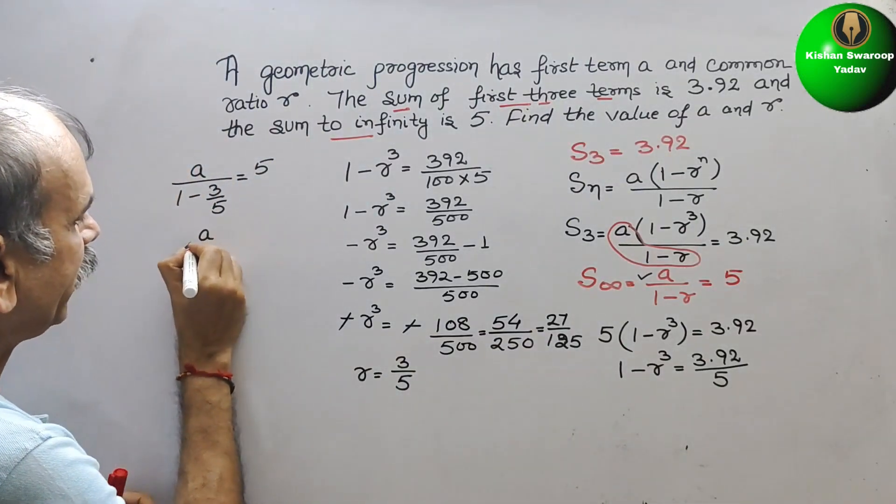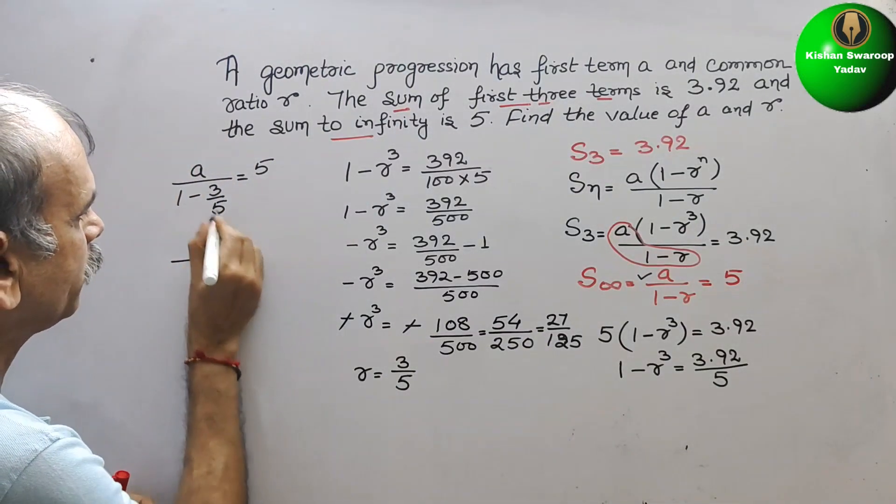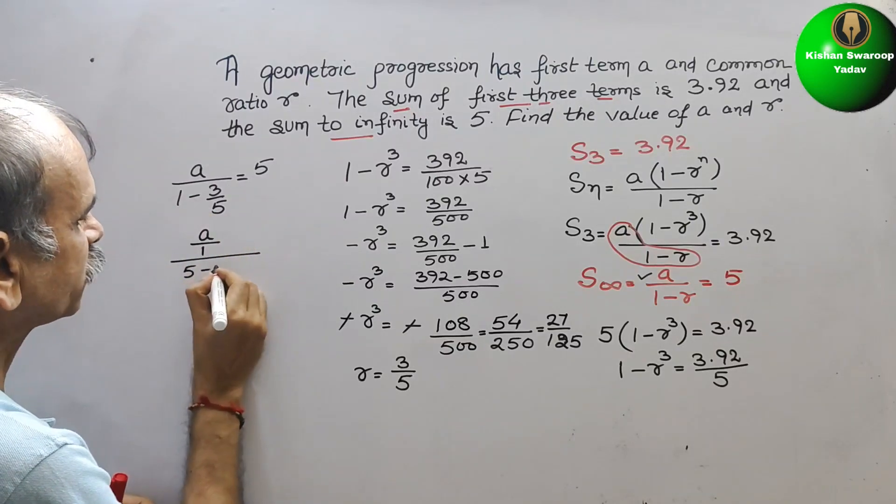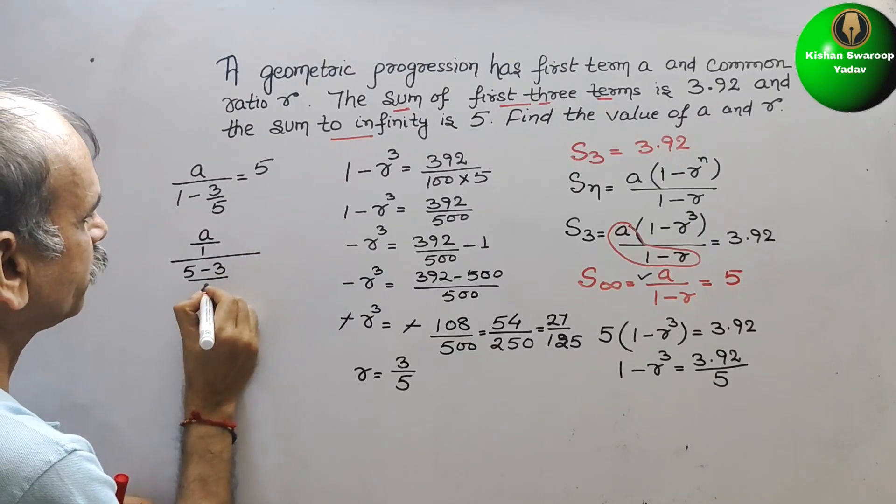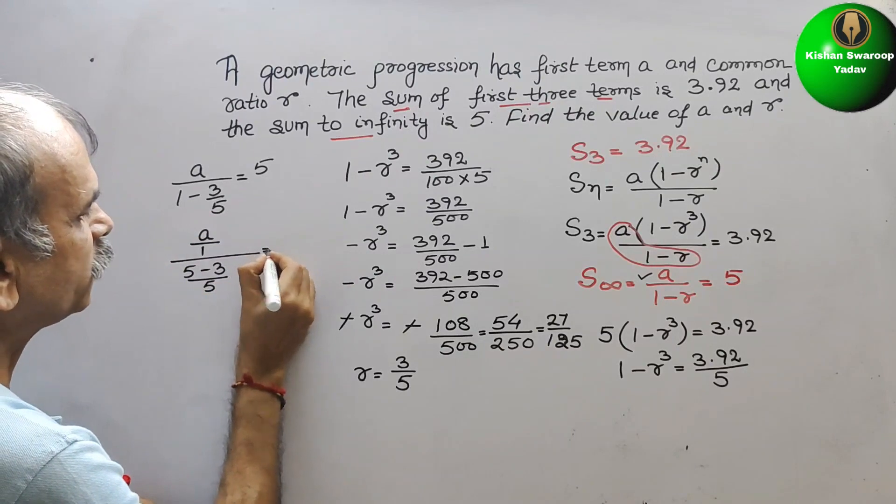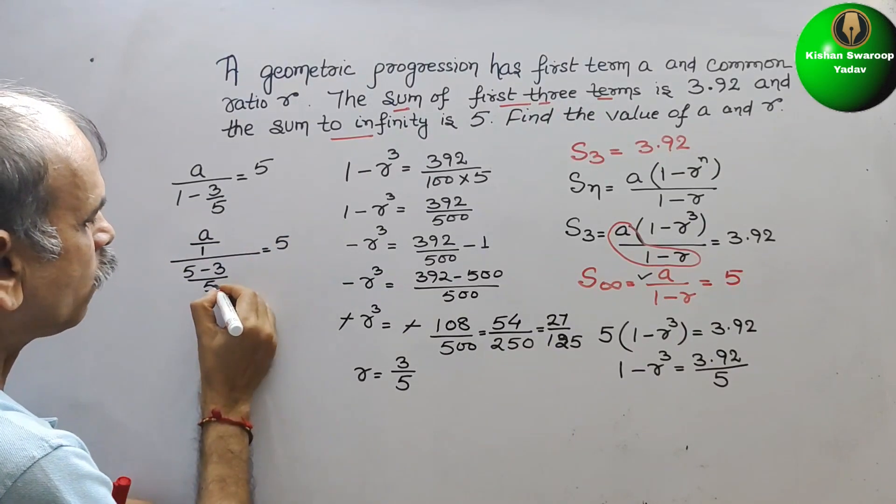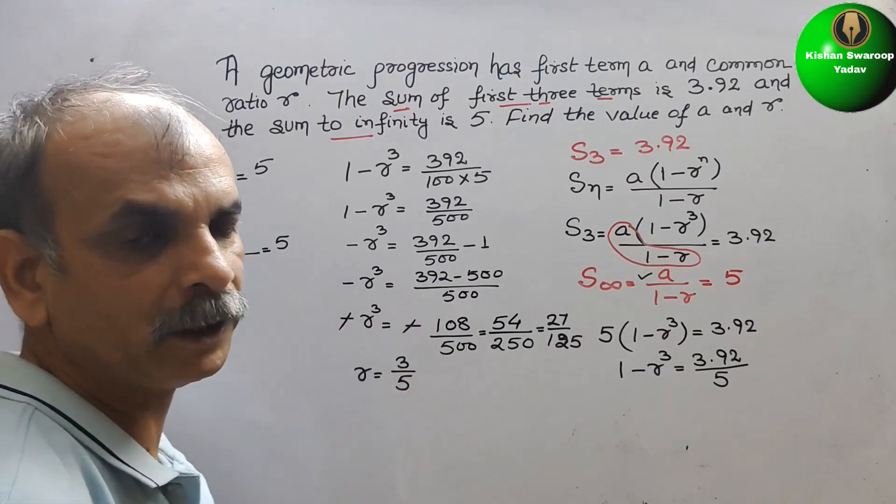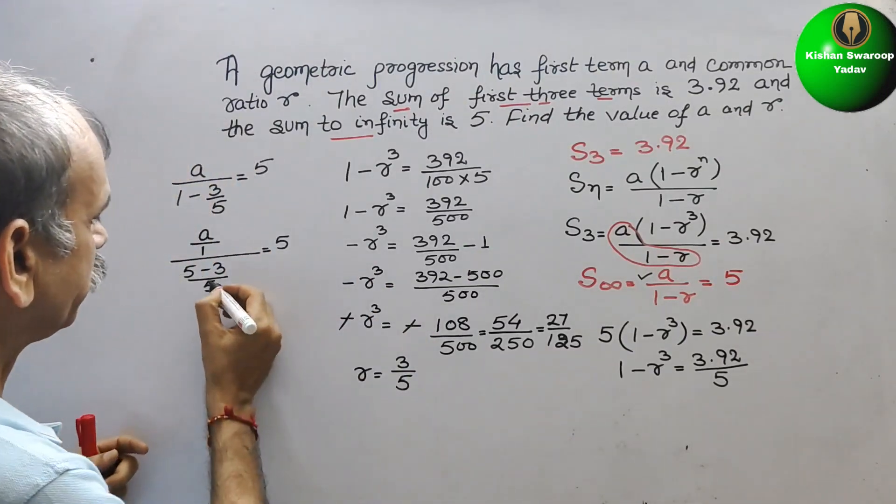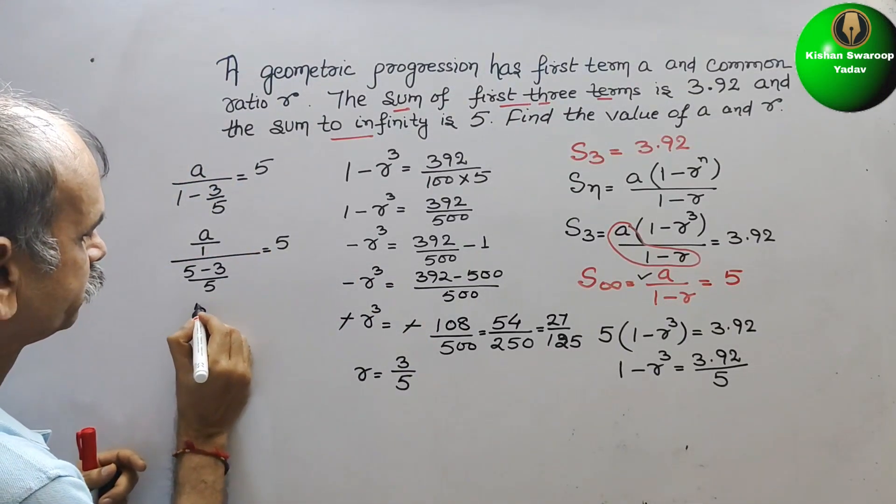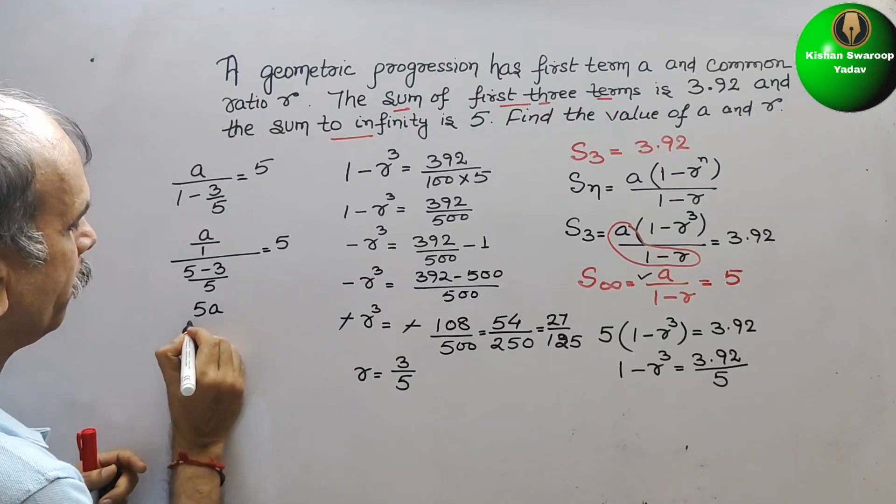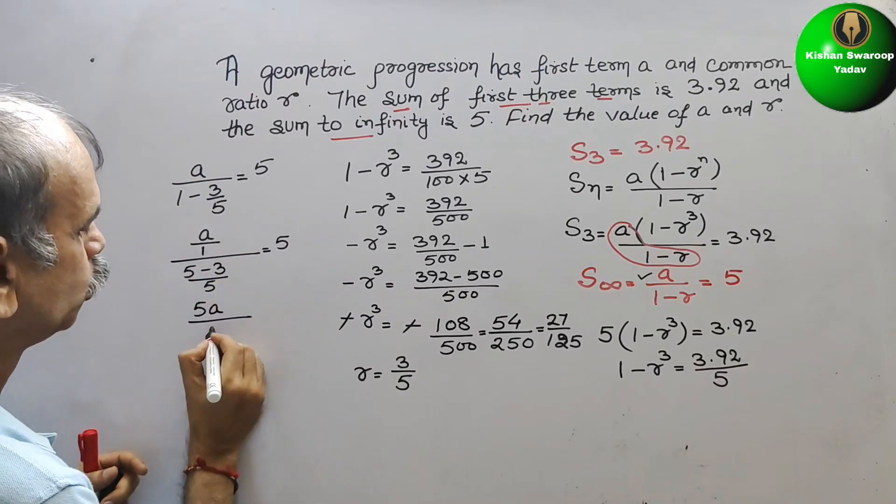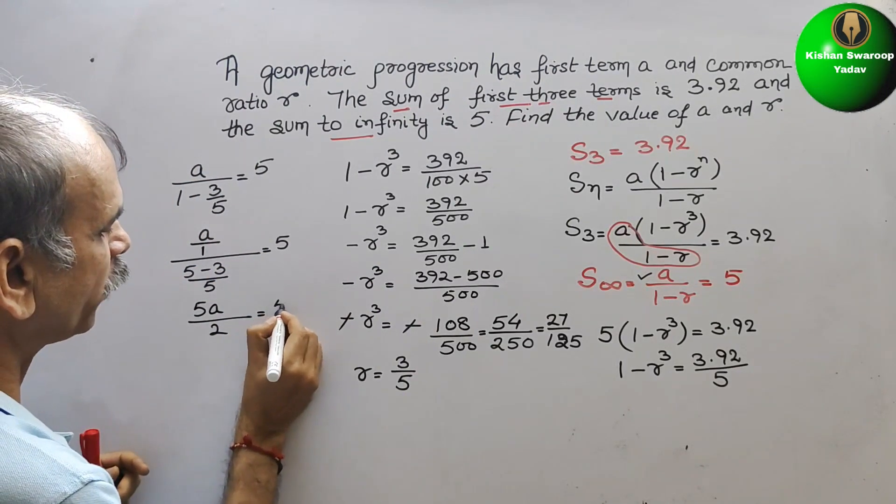It will be A by 1 divided by 5 minus 3, that is 2, over 5. That is equal to 5. Now go for outer to outer, inner to inner multiplication. So it will be 5A by 2 equals 5.